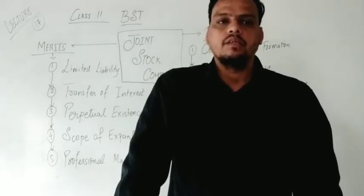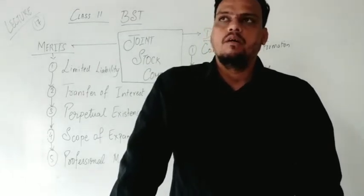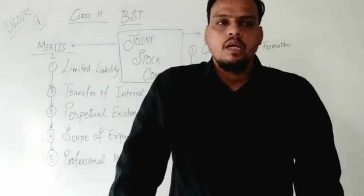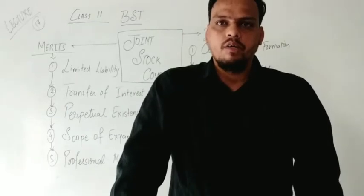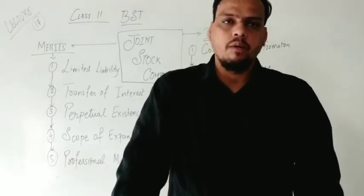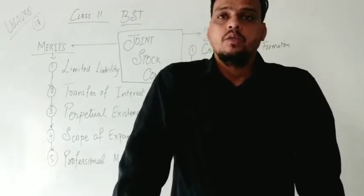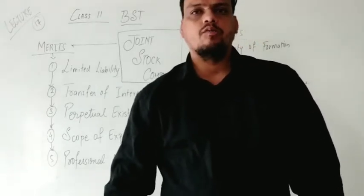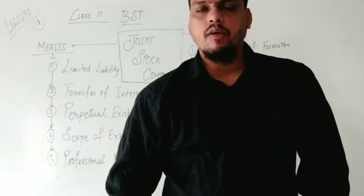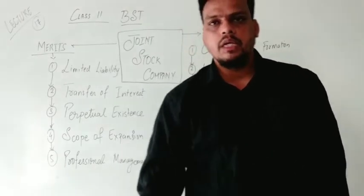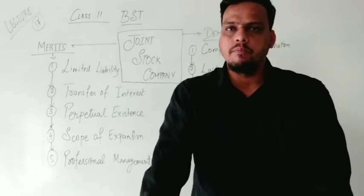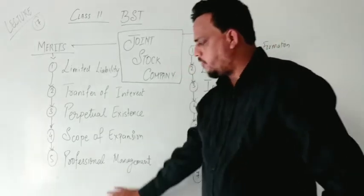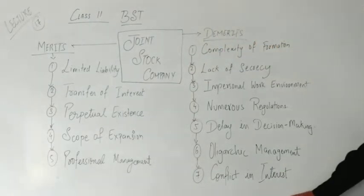In that we have completed our topics: sole proprietorship, partnership, HUF, and cooperative societies. We have also done one more topic known as joint stock company in the last video. Today we will see the merits and demerits of joint stock company in detail, one by one. In merits we have 5 points, and in demerits we have 7 points.